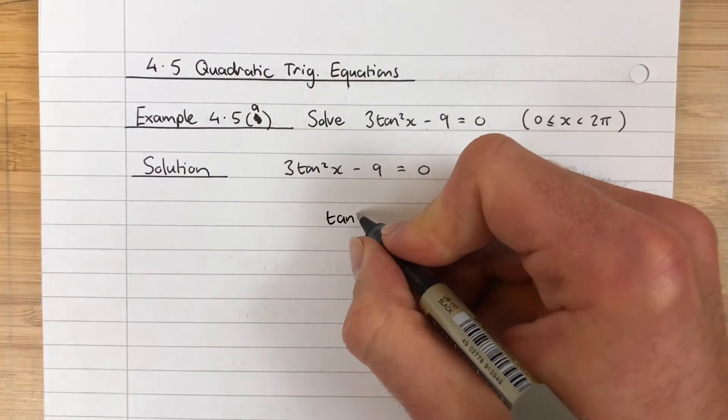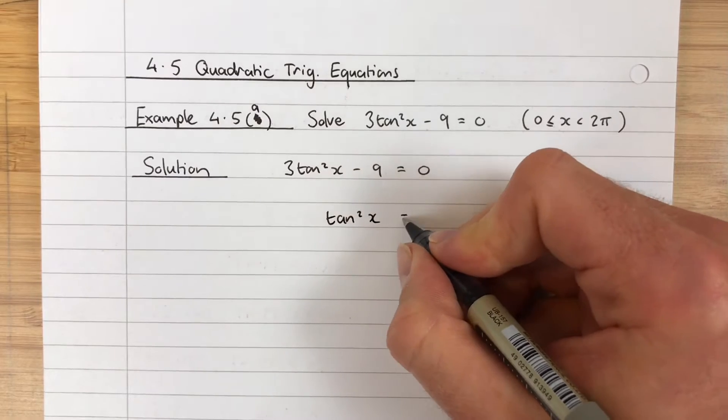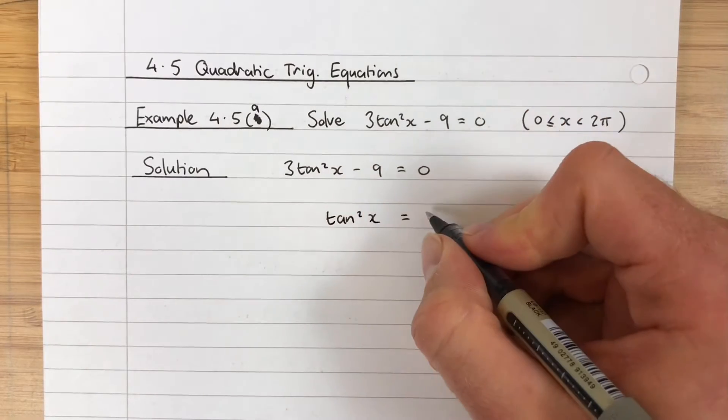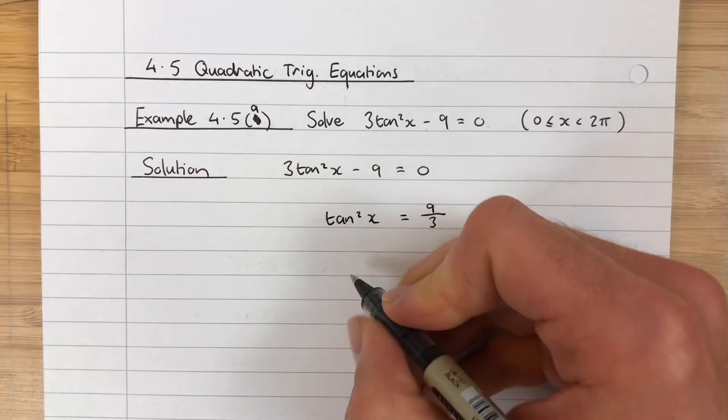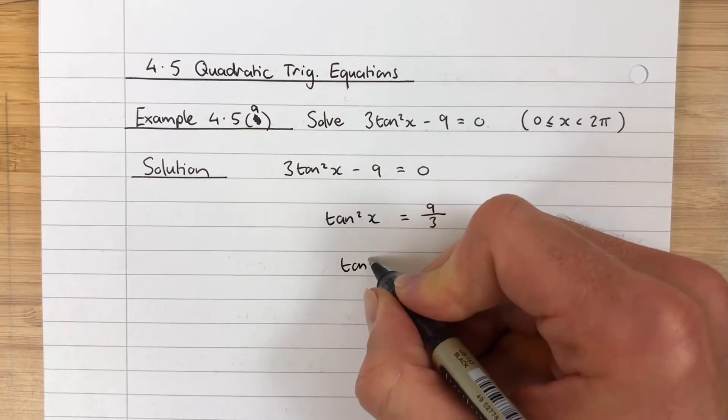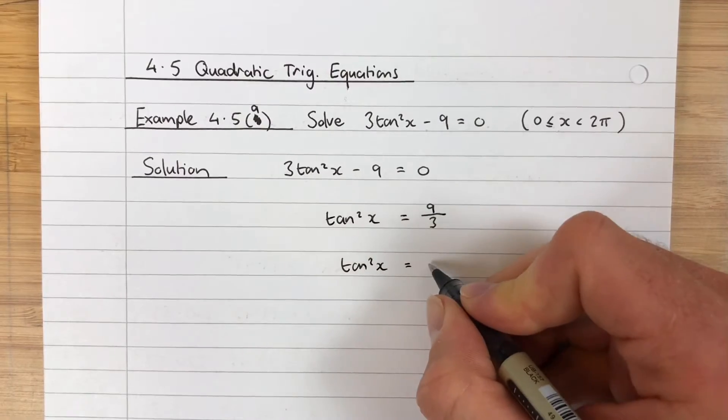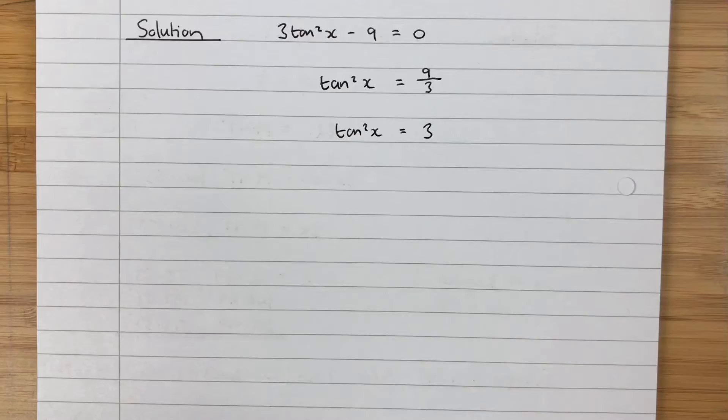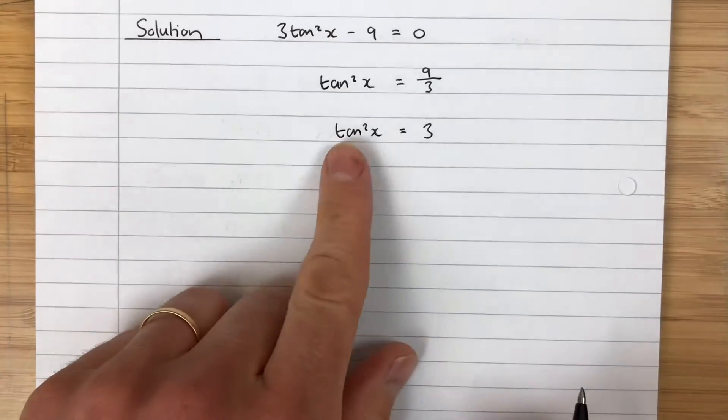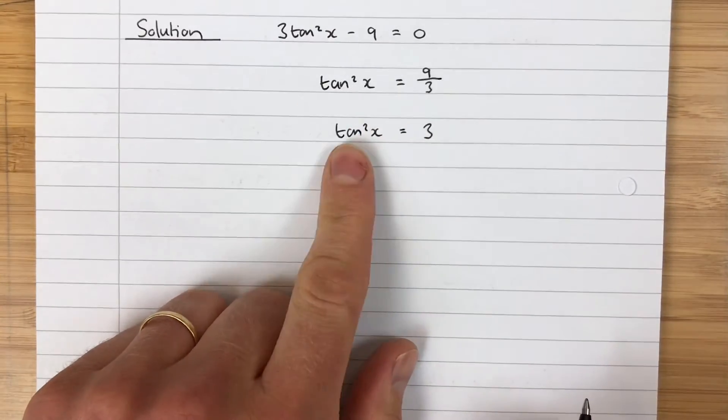So tan²x equals 3. Now I don't think that trig term is isolated yet because I've got tan x times itself here, that's tan x times tan x.